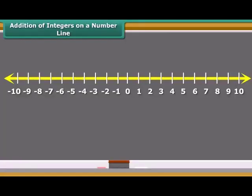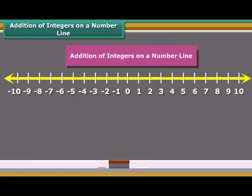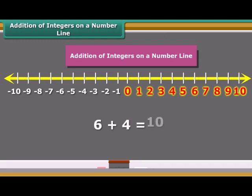Students, now we learn addition of two positive integers on a number line. If we add 6 and 4 on the number line, first move six steps to the right from 0 reaching 6, and then we move four more steps to the right of 6 and reach 10. Thus we get 6 plus 4 equals 10.